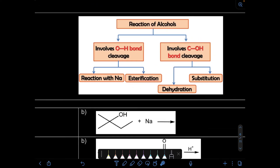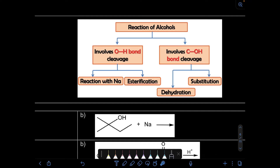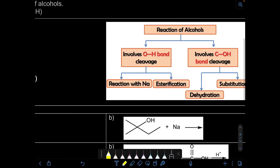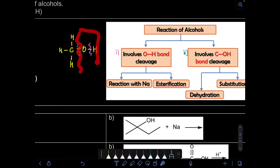For the reaction of alcohol, there are actually two types: one involving OH bond cleavage and another one involving C–OH bond cleavage. For example, with methanol, the first type involves cleaving the O–H bond, while the second involves breaking the C–OH bond. Reactions involving OH bond cleavage are the reaction with sodium and esterification, whereas COH bond cleavage covers dehydration (which we covered in chapter 12) and substitution.